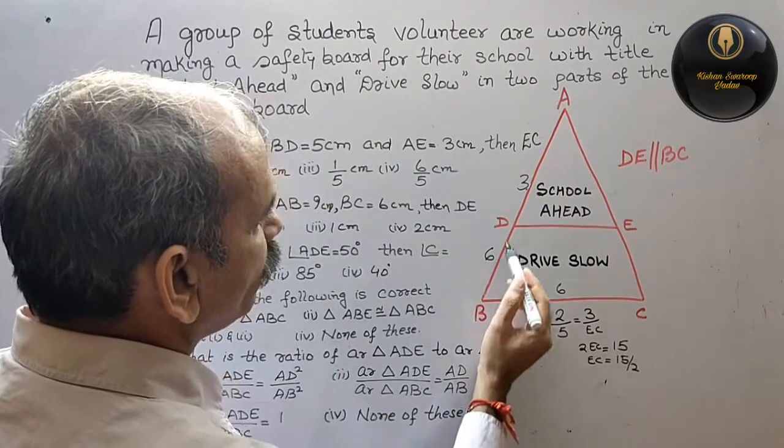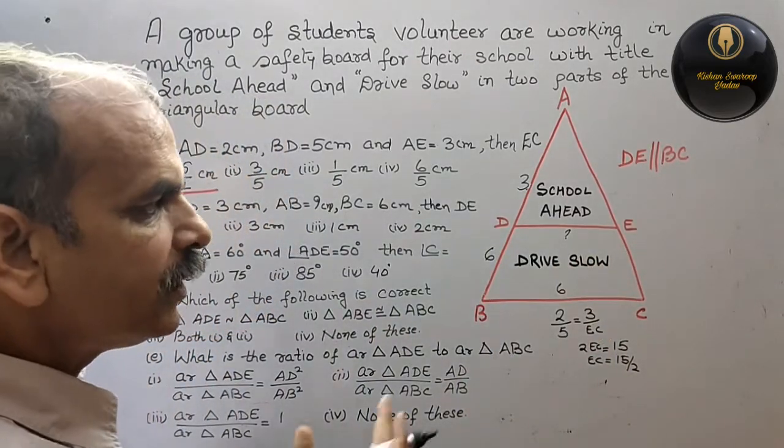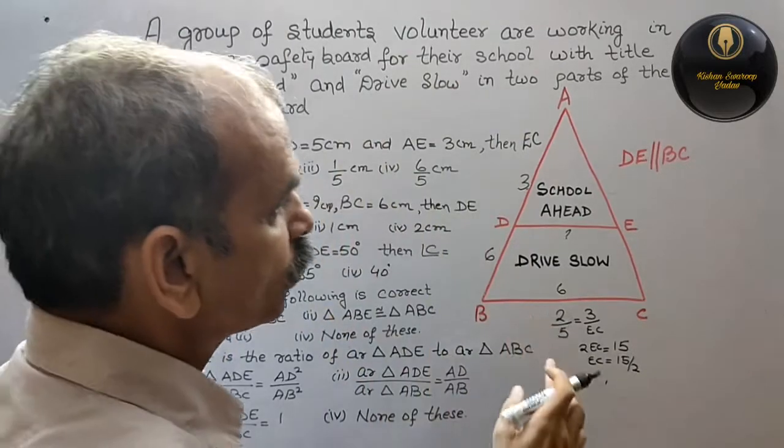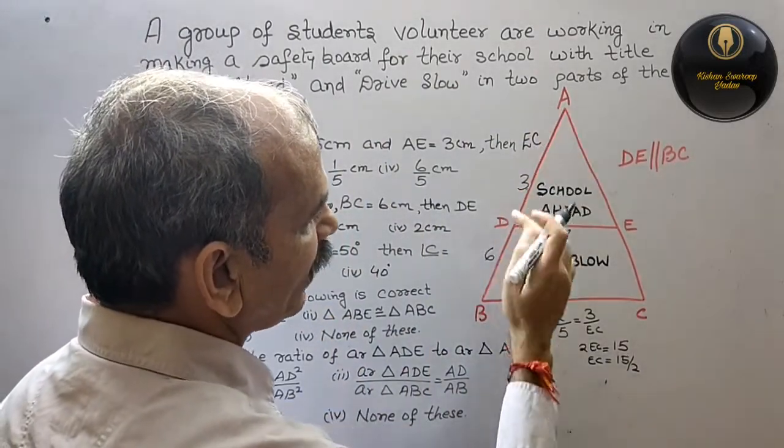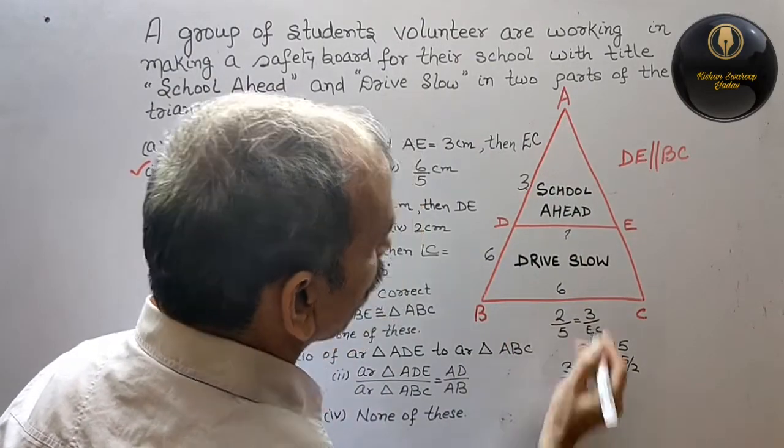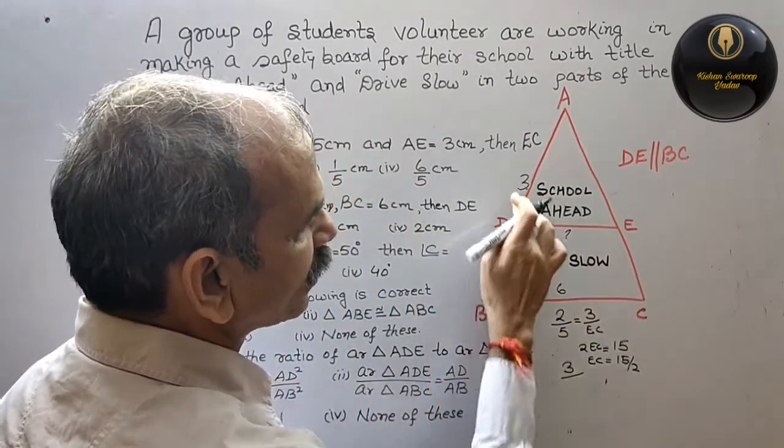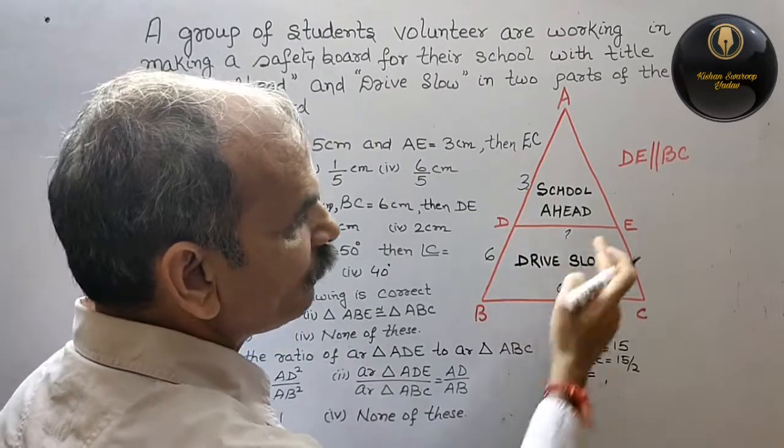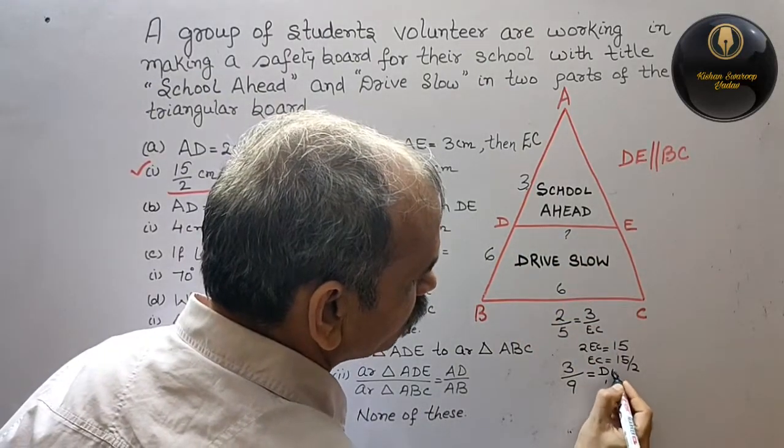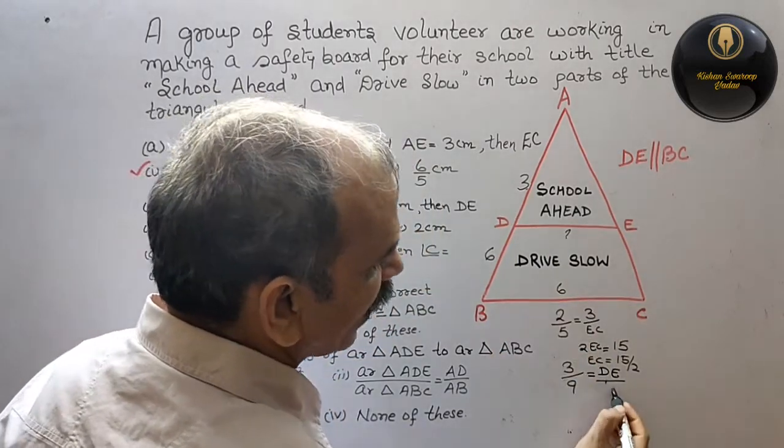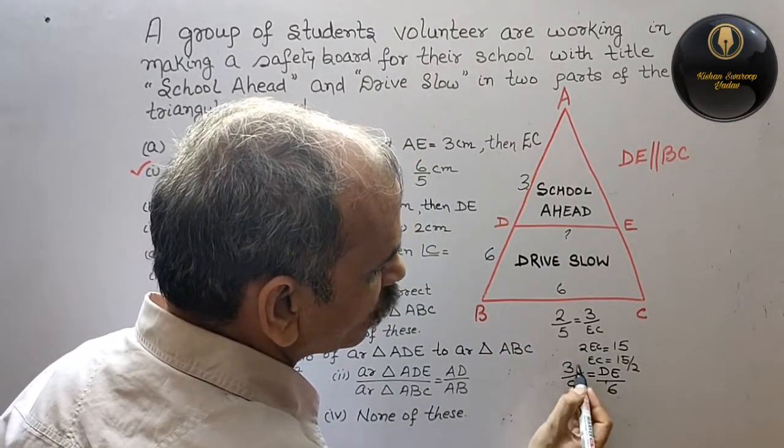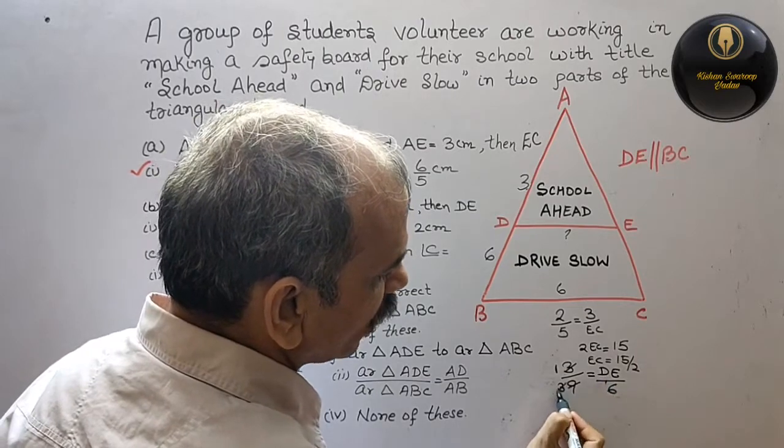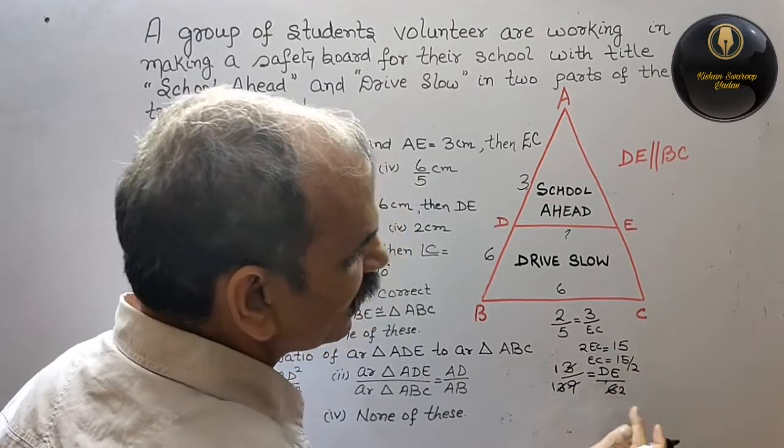We have to find out DE. So this is 3, then 6 plus 3 is 9. So DE by BC equals 3 by 9. Cross multiply or cut, this is 3, this is 1. So DE is 2 cm.